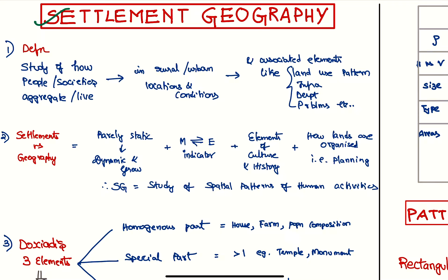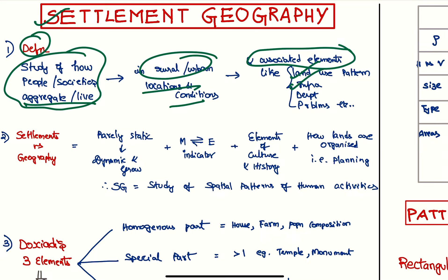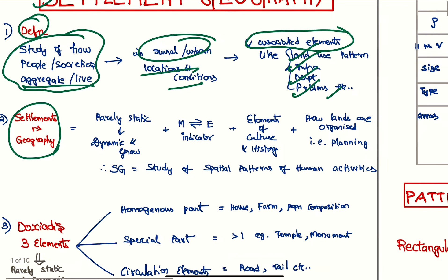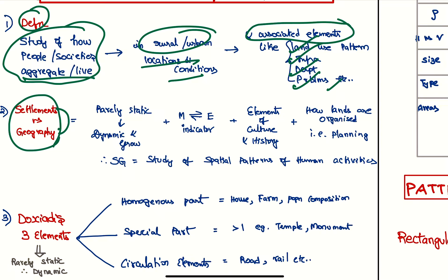Let's revise complete settlement geography. First of all, let's see what is settlement geography. It is the study of how people or societies aggregate and live in urban or rural conditions, and associated elements like land use pattern, infrastructure development, and problems.